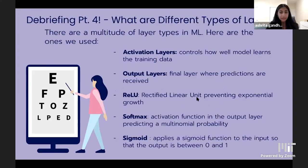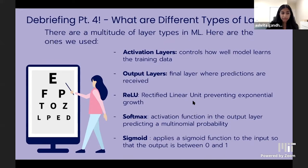There are different kinds of layers we used. Activation layers control how well the model learns the training data. Output layers are the final layer where predictions are received. ReLU — Rectified Linear Unit — prevents exponential growth. Softmax is an activation function in the output layer predicting multinomial probability. Sigmoid applies the sigmoid function so the output is a numerical value between 0 and 1.